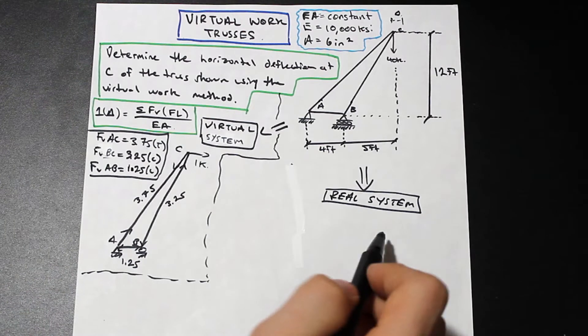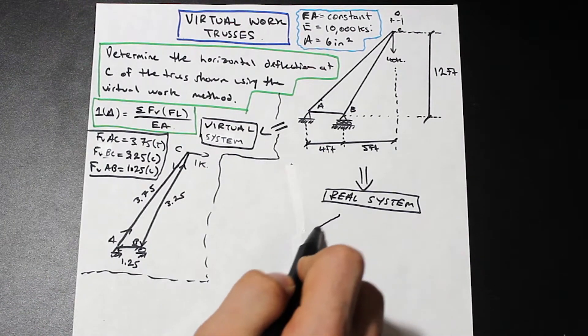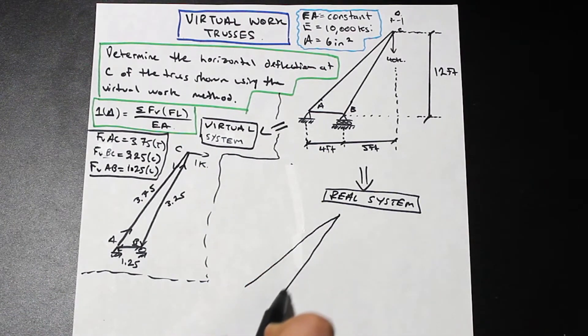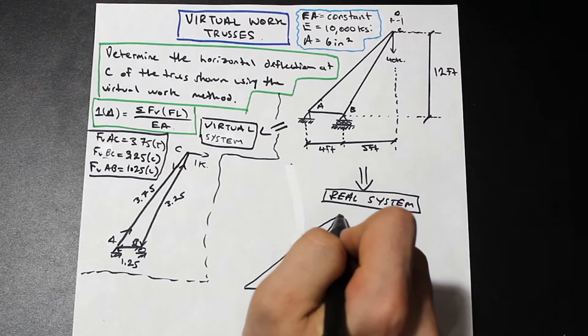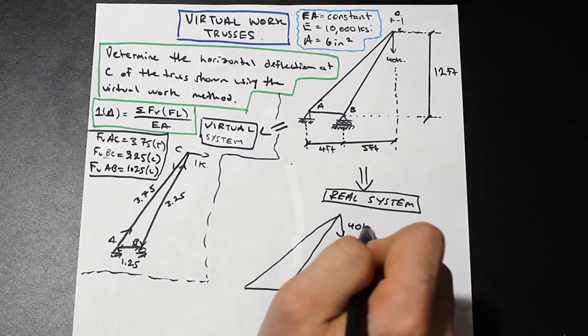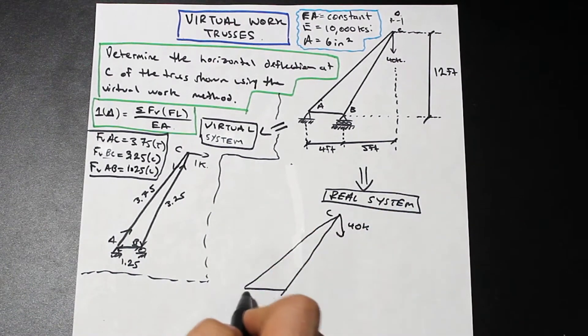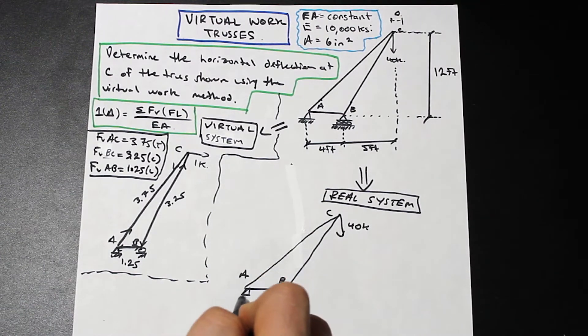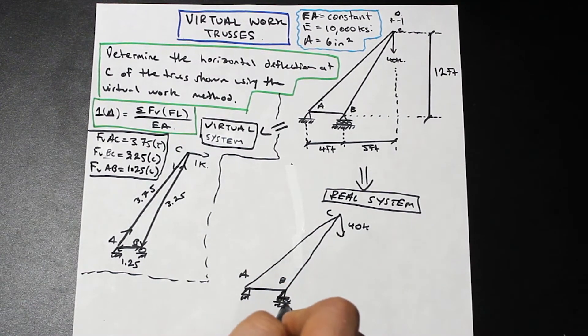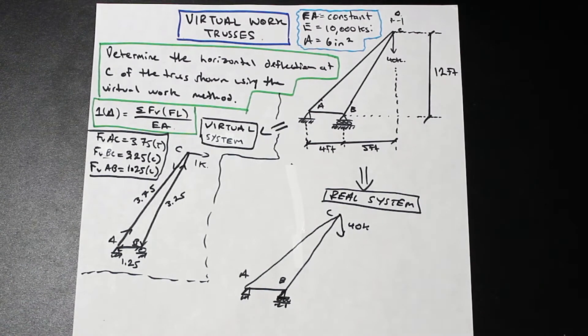Now let's go over to the real system. Let's redraw the truss here. We have our truss again, and now we're going to include those external loads that we left out from before. Exactly the same thing, pretty straightforward. We're just going to find the axial force in each member.